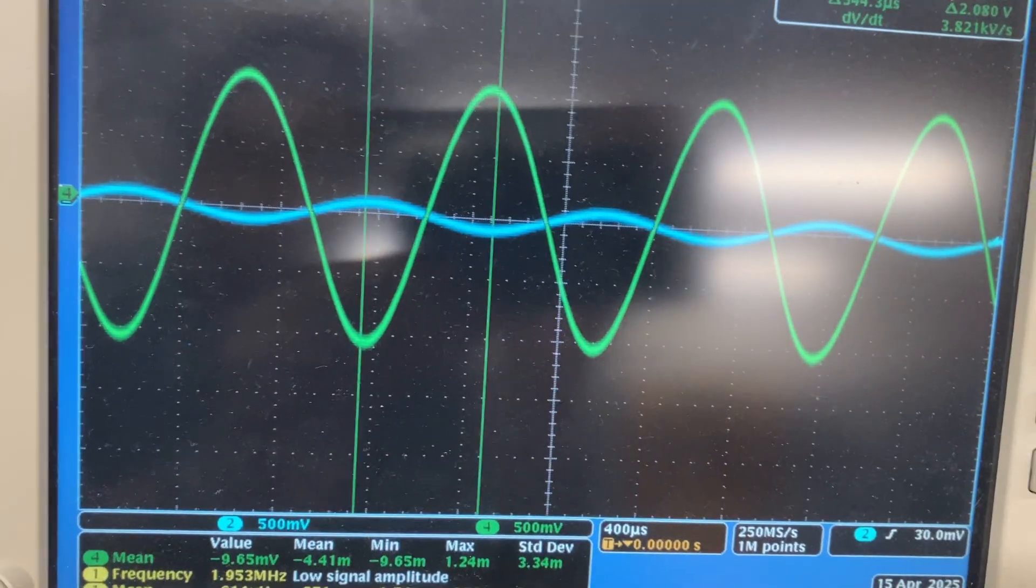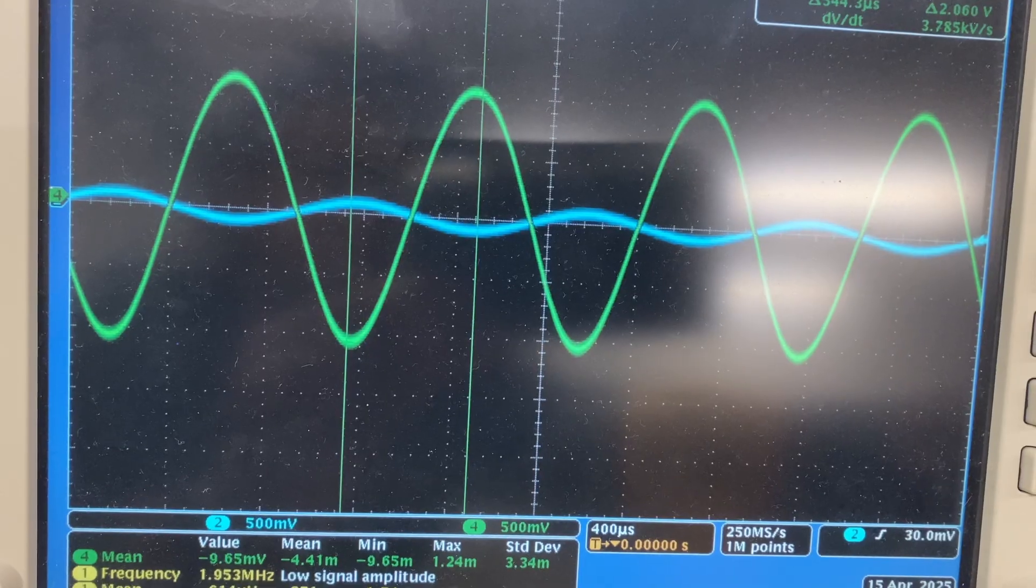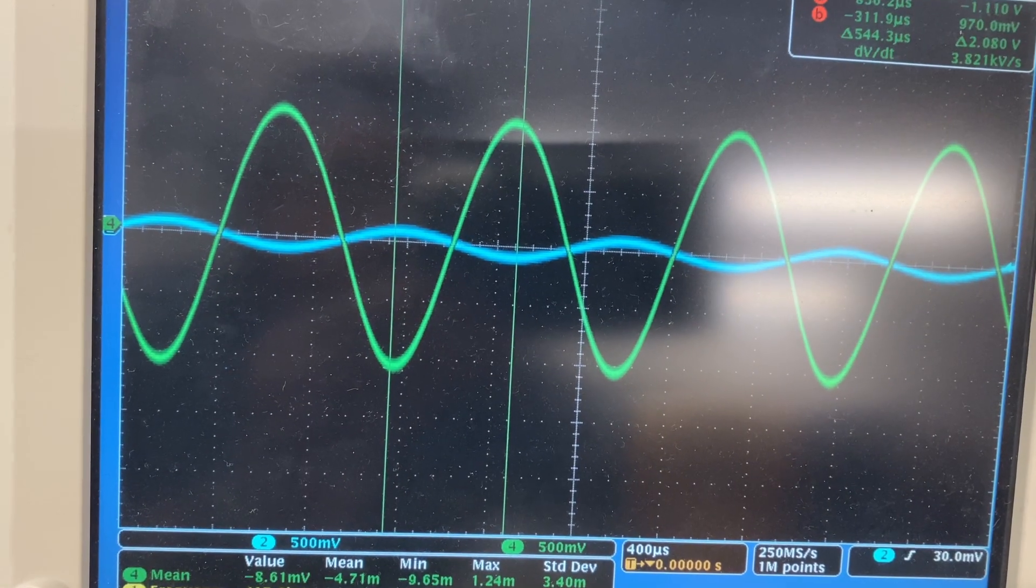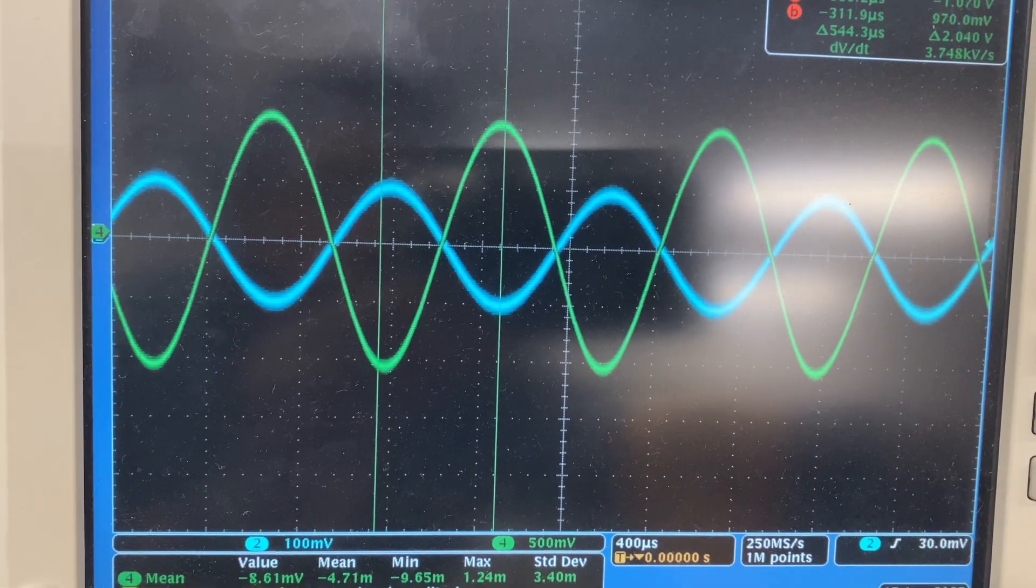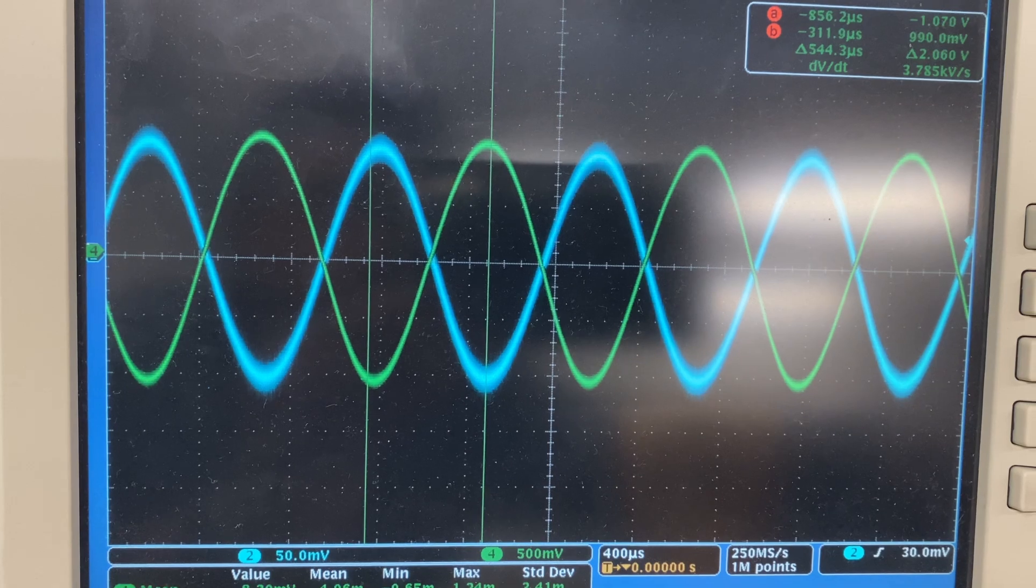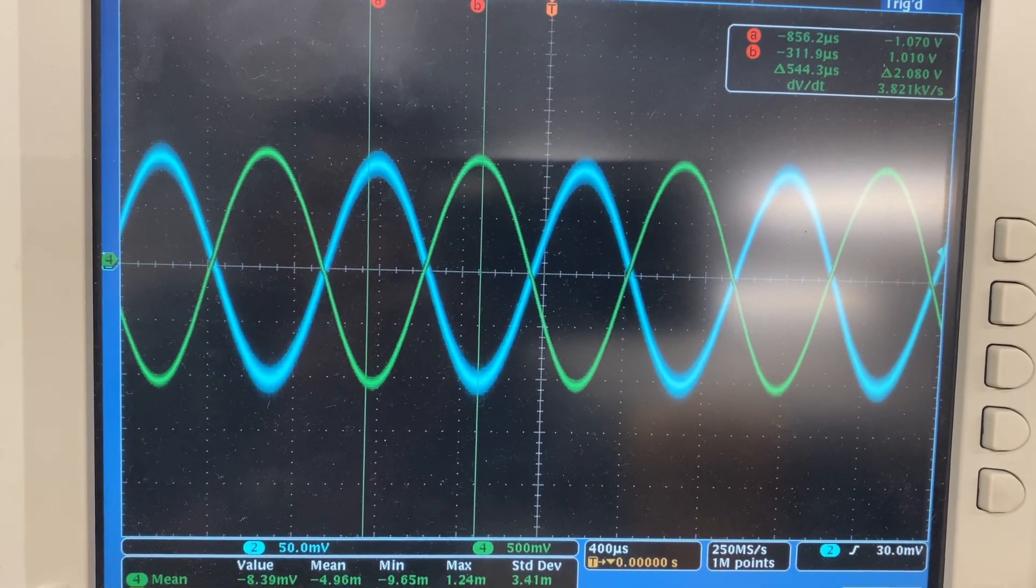Changing the scale on the scope, we can confirm that. This is far from the theoretical value of 16 that we calculated, but this deviation is expected due to the inaccurate resistor values and shift in the biasing point of the MOSFET.